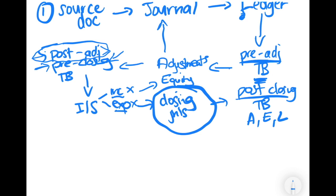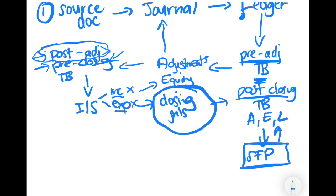Now that we have a post-closing trial balance, we can go and prepare our statement of financial position, which is basically a summary of assets, equity, and liabilities. After completing the statement of financial position, we can then go and prepare our other financial statements.